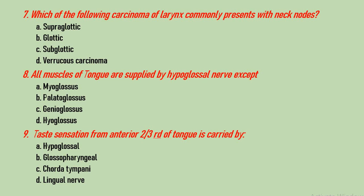Question number 8: all muscles of the tongue are supplied by the hypoglossal nerve except which? Options are myoglossus, palatoglossus, genioglossus, and hyoglossus. There is no such muscle as myoglossus, so the correct answer is A.